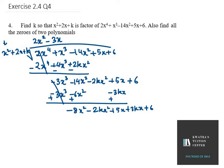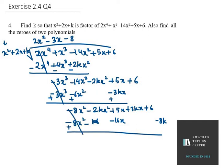Now we need to make x² into minus 8x², so we multiply by minus 8. That gives minus 8x², then minus 16x placed below 5x, and minus 8k. After subtracting and changing signs, we cancel the 8x² terms and are left with minus 2kx², plus 21x, plus 3kx, plus 6, plus 8k.